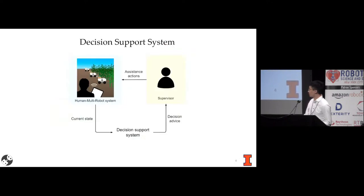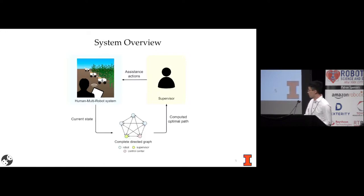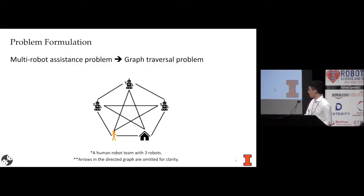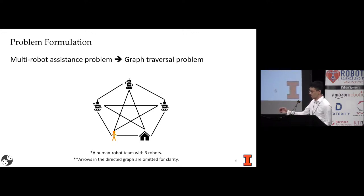In such cases of imperfect autonomy, a human-in-the-loop design is necessary, where a single human may need to supervise and manage multiple robots. Optimally identifying which robot to assist and in which order is a challenging task. Decision support systems have been proposed to provide advice, but many previous methods use an MDP whose optimal solution is intractable. In contrast, we model the human multi-robot assistance problem as a graph traversal problem, based on which the optimal path can be computed for the supervisor to follow.